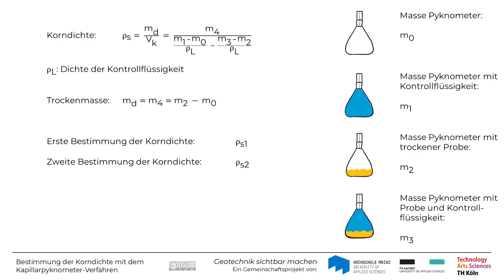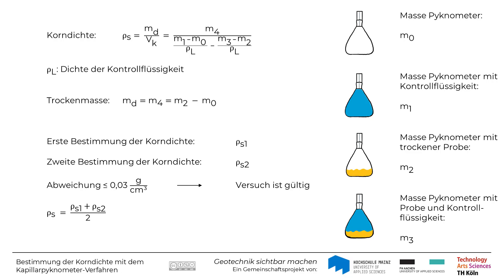Das hier erläuterte Verfahren zur Bestimmung der Korndichte muss ein zweites Mal wiederholt werden. Bei einer Abweichung der ermittelten Ergebnisgrößen Rho-S1 und Rho-S2 unter 0,03 g pro Kubikzentimeter wird der Mittelwert aus beiden Ergebnissen als Korndichte Rho-S dokumentiert. Bei einer größeren Abweichung müssen die Versuche wiederholt werden.